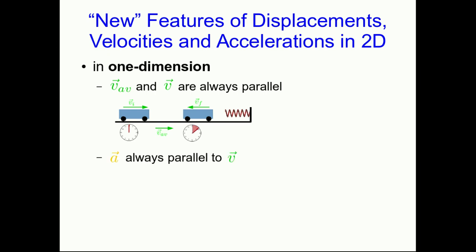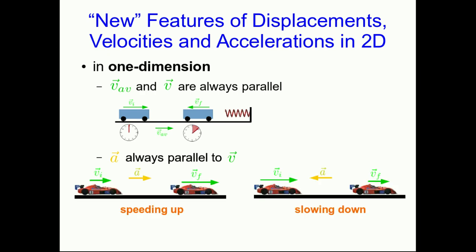Similarly, the acceleration was always parallel to the velocity, and in particular, if it pointed in the same direction, the object was speeding up, and if it pointed in the opposite direction, the object was slowing down. But neither of these are true in two dimensions, although the last one — to do with how the acceleration points relative to the velocity — will have a similar but slightly more complicated rule.